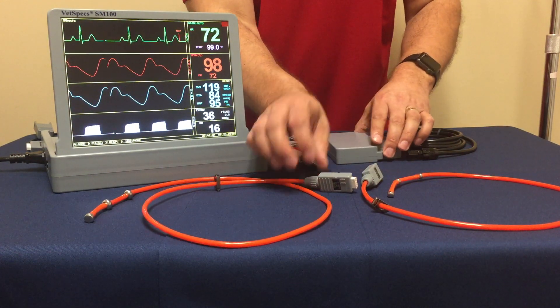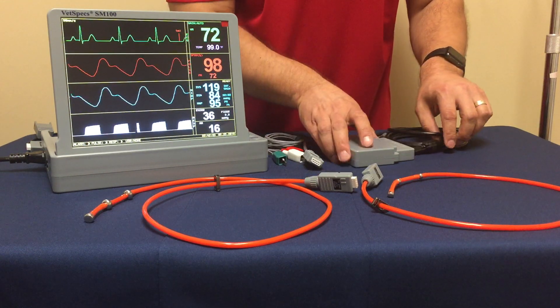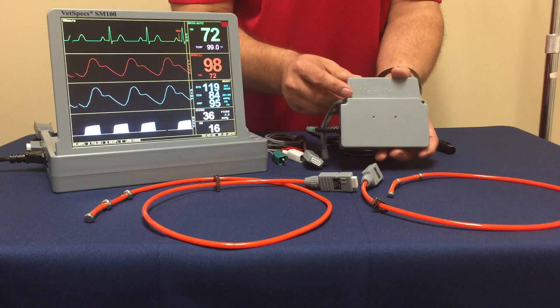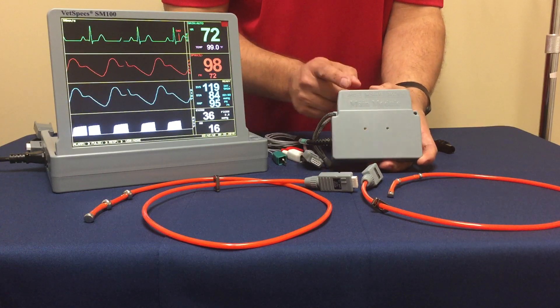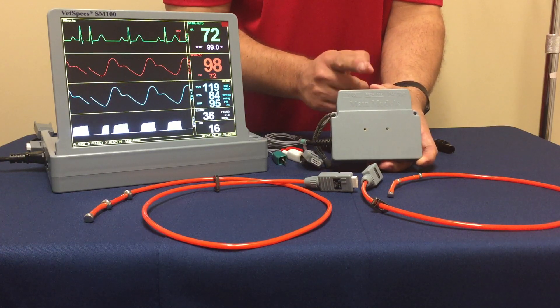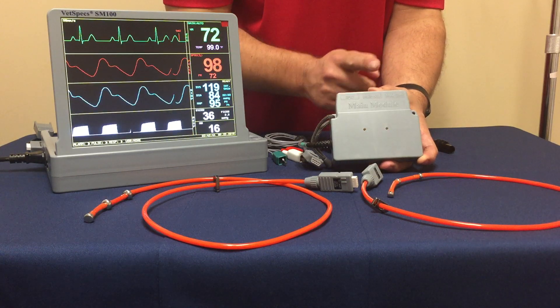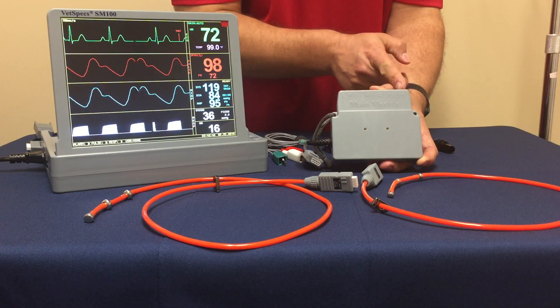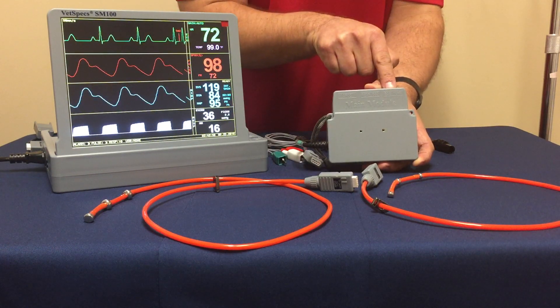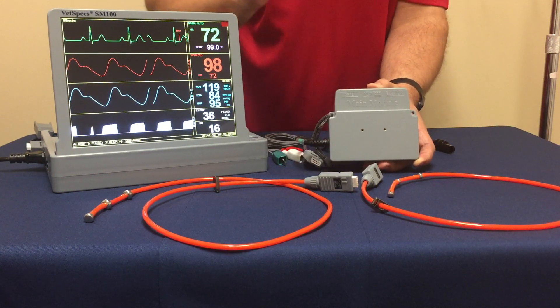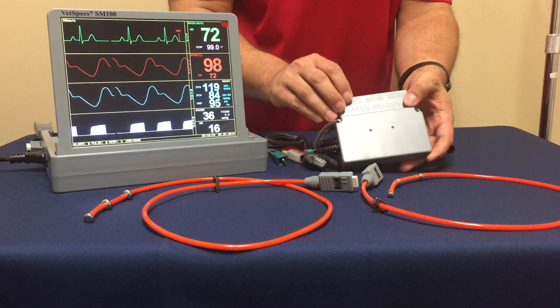As for connecting the esophageal probes, this will connect through the main module that comes with the VetSpecs systems. The main module has your SpO2 port, your respiratory CO2, and then your ECG temp port. You can plug your esophageal probes directly into the port and you're going to be getting your temperature, ECG, and heart rate.